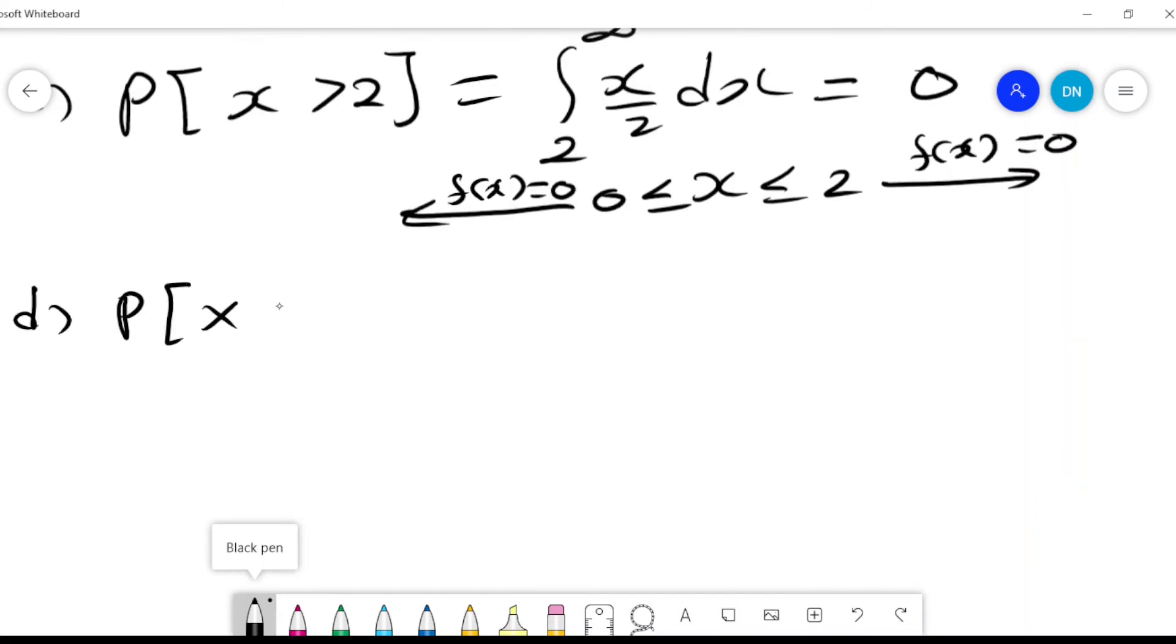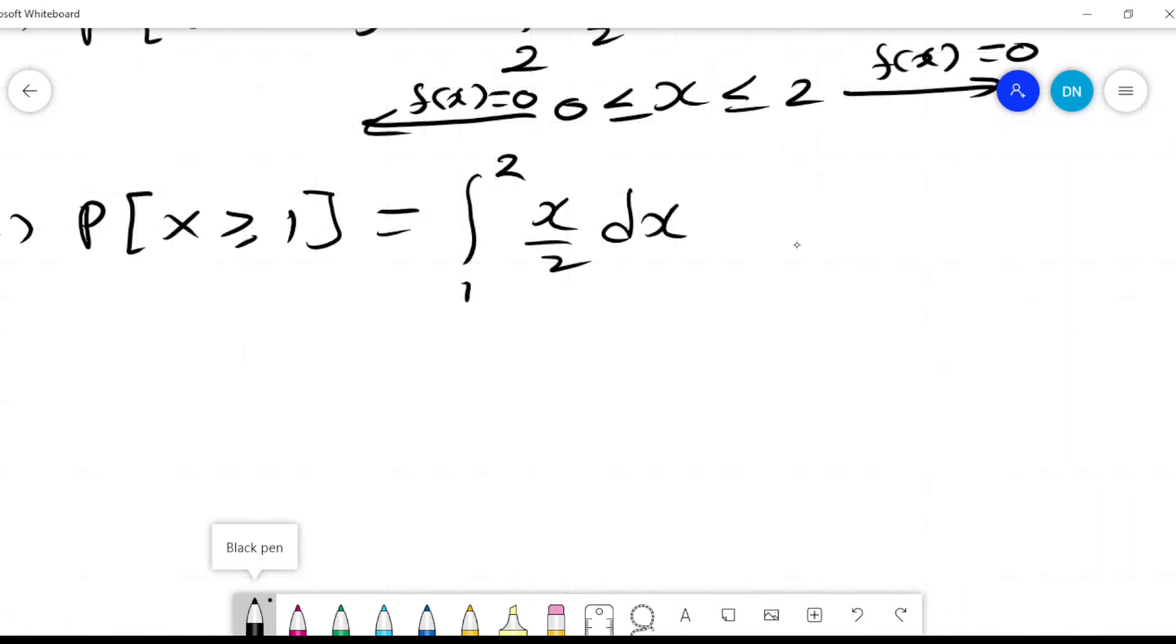Probability X greater than or equals to 1. So it will be the integral from 1 to 2 of x over 2 dx, and this will be equals to x squared over 4. 1 to 2 will be 4 over 4 minus 1 over 4, and that will be 3 over 4.